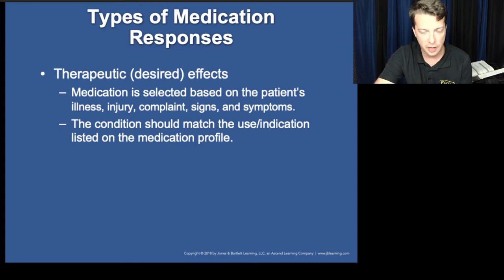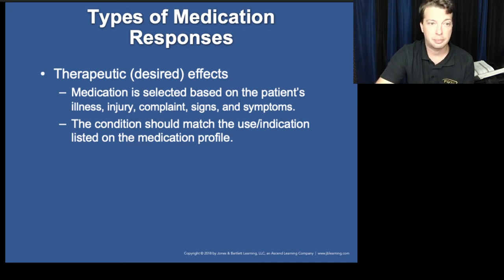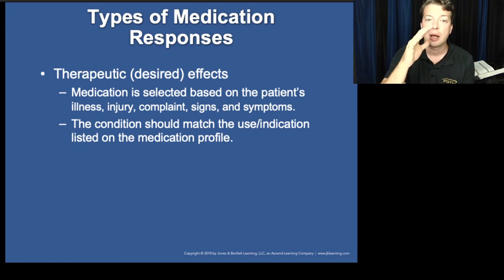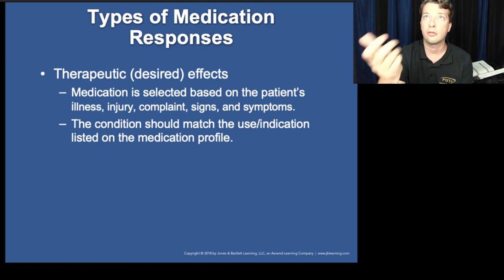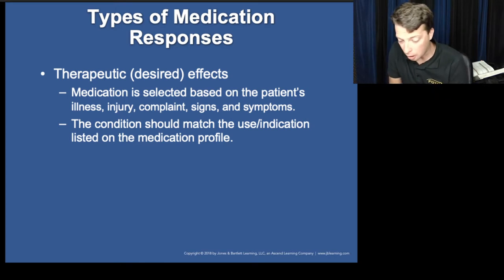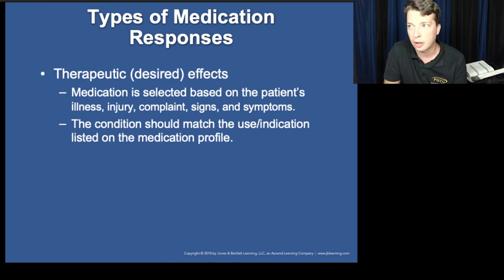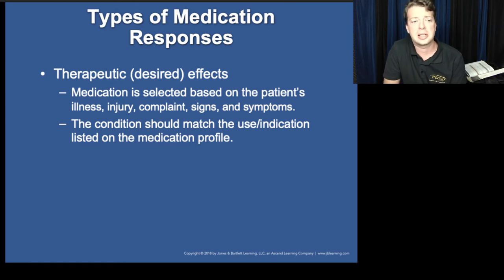Phenergan does have a lot of side effects but is very effective. Zofran is a much newer medication with a lot less side effects — some argue it's not as effective. My personal experience: if the patient is actively vomiting, Zofran probably won't do much good. But if the patient hasn't vomited yet, is feeling nauseated, or vomited a while ago, Zofran tends to be more effective. I'll go with Phenergan when the condition is much more severe.